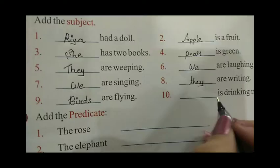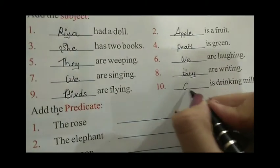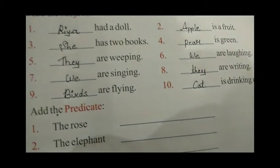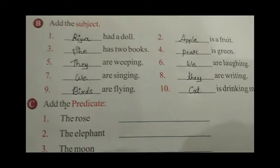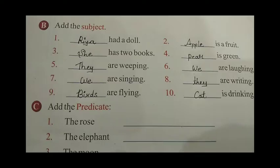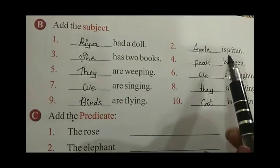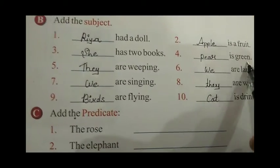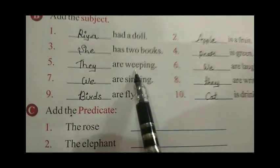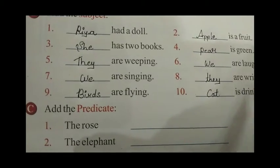The tenth one is: dash is drinking milk — cat is drinking milk — C, A, T — cat. Cat is drinking milk. So from this exercise you have to write the first five sentences in your English grammar copy. Once again: Ria had a doll, Apple is a fruit, She has two books, Pear is green, They are weeping, We are laughing, We are singing, They are writing, Birds are flying, Cat is drinking milk.